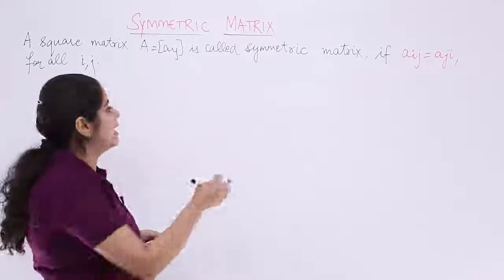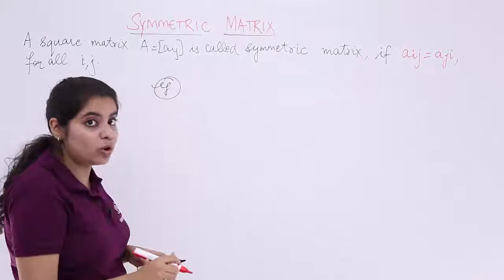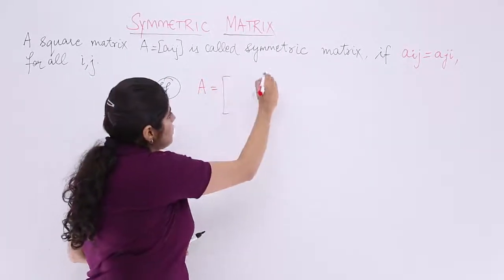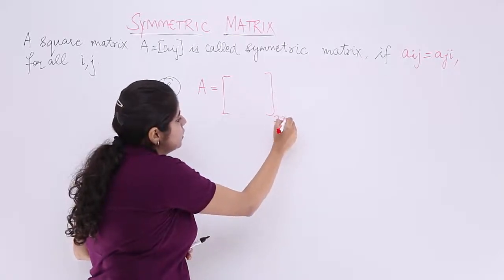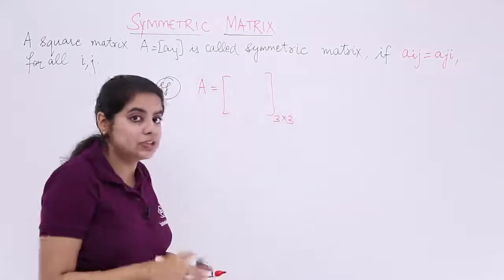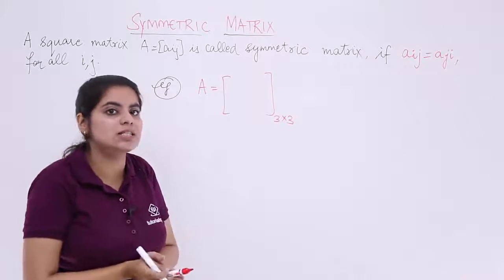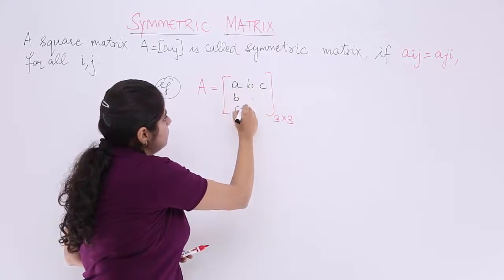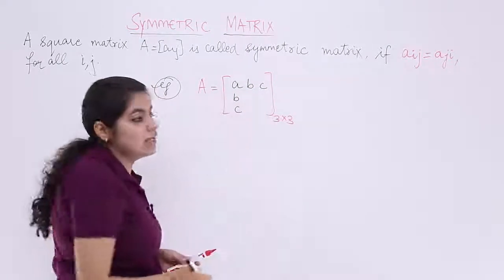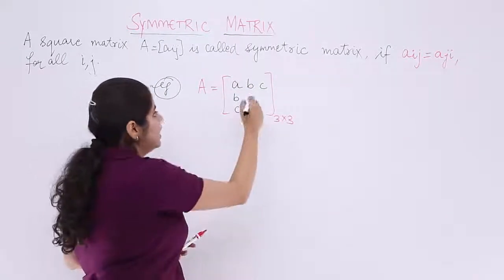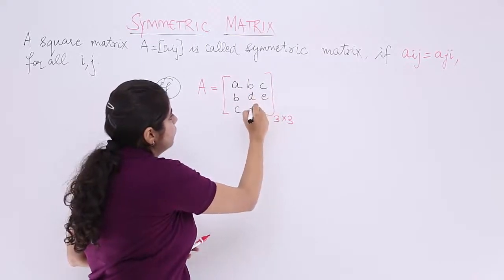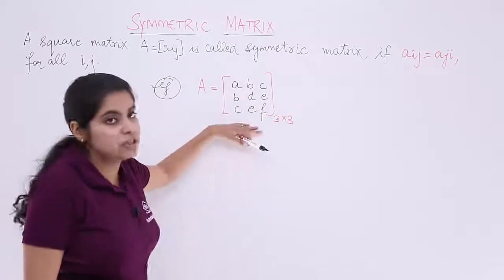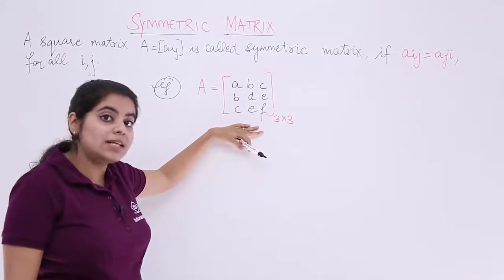Suppose I consider an example to make things more clear. I have a matrix A with order 3 by 3, that means 3 rows, 3 columns, hence it is a square matrix. The entries are A, B, C as the first row, then the matrix continues with these elements. Now there is something special about this matrix.